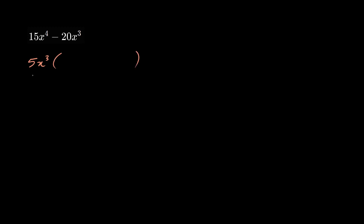We set up some brackets. 5x cubed multiplied by 3x becomes 15x to the 4, which is the first term, minus 5x cubed times 4, which becomes the second term. So this here is the factored form.